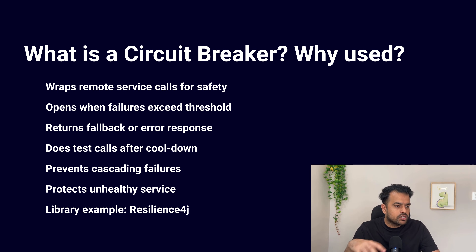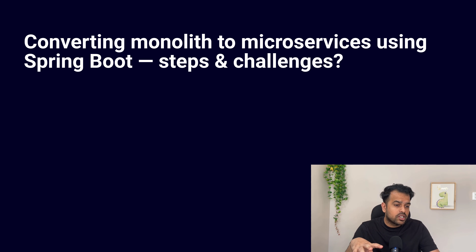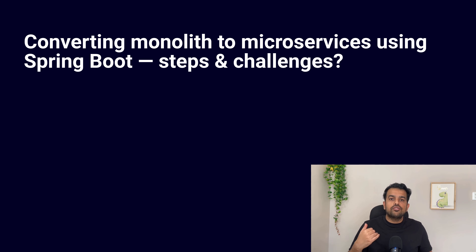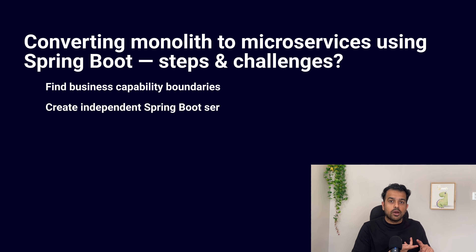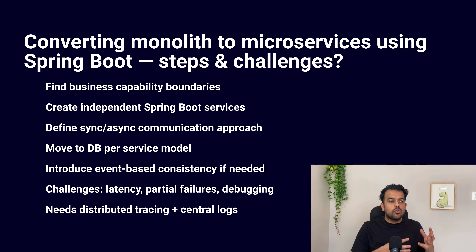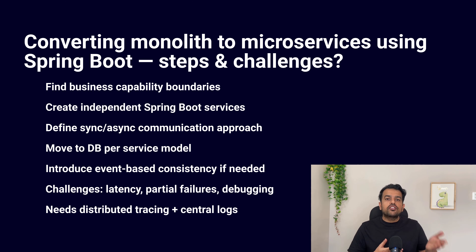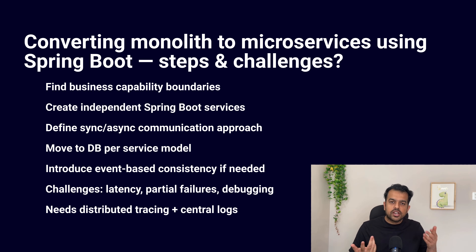Our next question is: you are converting a monolithic application into microservices using Spring Boot — describe the steps involved and the challenges you might face. To convert a monolithic application into microservices, you first identify business capability boundaries and break the application into smaller, manageable pieces. Then you create a separate Spring Boot project for each microservice. Next, you define the communication — how services will communicate with each other, using REST APIs or messaging like Kafka or RabbitMQ. Challenges include complexity in managing multiple services, data consistency issues since each service manages its own database, and difficulty in troubleshooting across services.